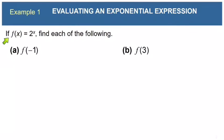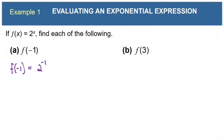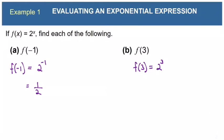Let's look at example 1. Here we have f(x) = 2^x, and this is an example of an exponential function, which we've not seen before. We've never had a function where the variable was in the exponent. So let's evaluate f(-1), which means we plug -1 in where the x is. So f(-1) = 2^(-1), which is 1/2. And if we evaluate f(3), that's 2^3, which is 8.